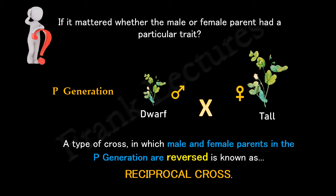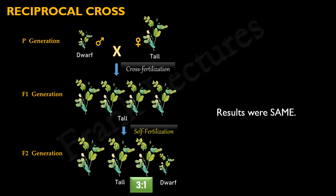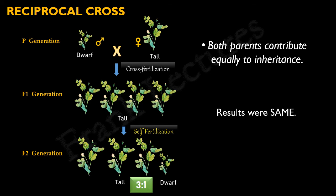What were the results of this reciprocal cross? The results were the same. All the F1 progeny consisted of tall plants, and tall plants were more abundant in the F2 generation relative to the dwarf plants. The ratio of F2 generation was also the same — 3 to 1. On the basis of these experiments, Mendel concluded that it does not matter whether the trait for stem length comes from the male or female parent; both parents contributed equally to inheritance.